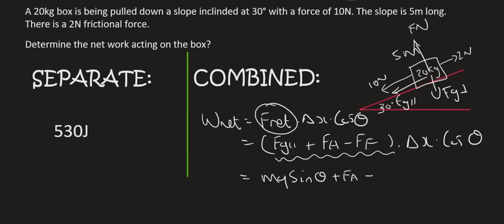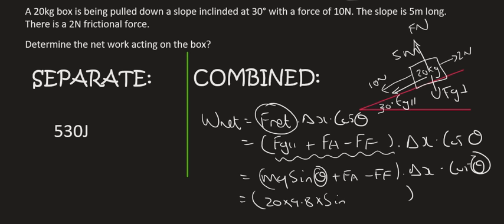Fa we know what that is. We'll fill that in just now. And friction they've already told us. We'll fill that in just now. Delta x cos theta. And so now we can just go fill everything in. So the mass of the object is 20. Gravity is 9.8. This theta is not the same as this theta. So that's going to be sin of 30 degrees. Plus Fa which is 10 minus your frictional force which is 2. And then the distance of the slope is 5 meters.